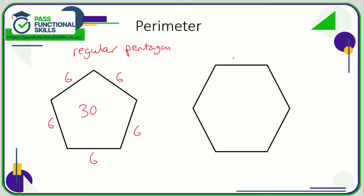Here we have a regular hexagon. Again, if they tell you that one side is eight centimeters, then every side is going to be eight centimeters, so the perimeter is eight times six, or 48 centimeters.